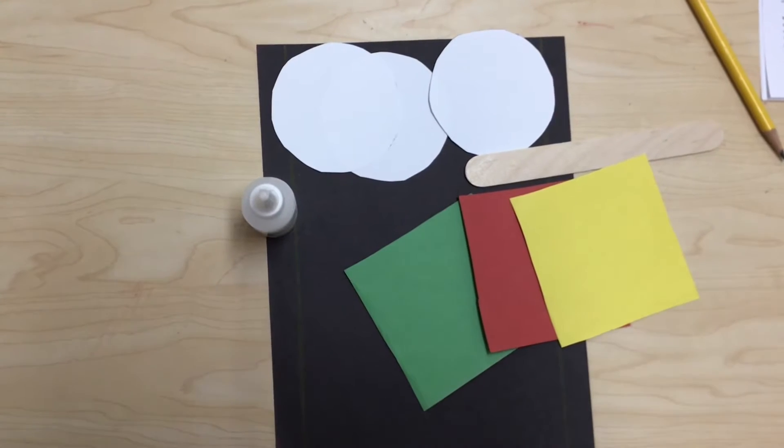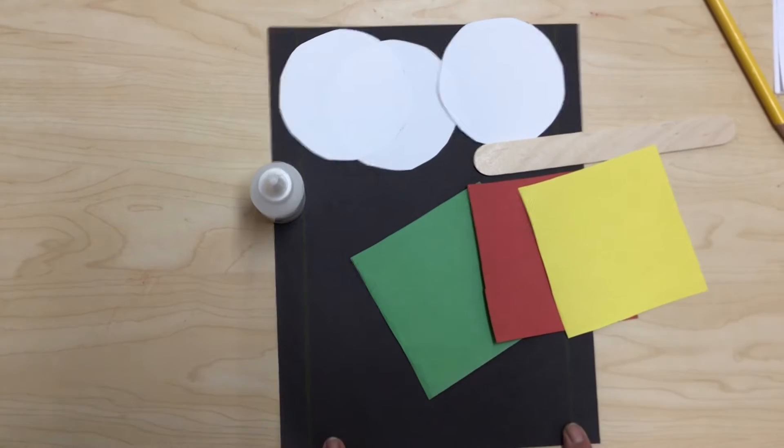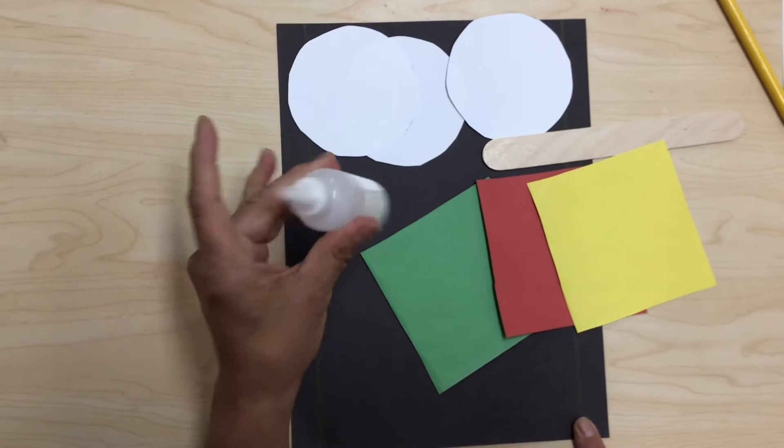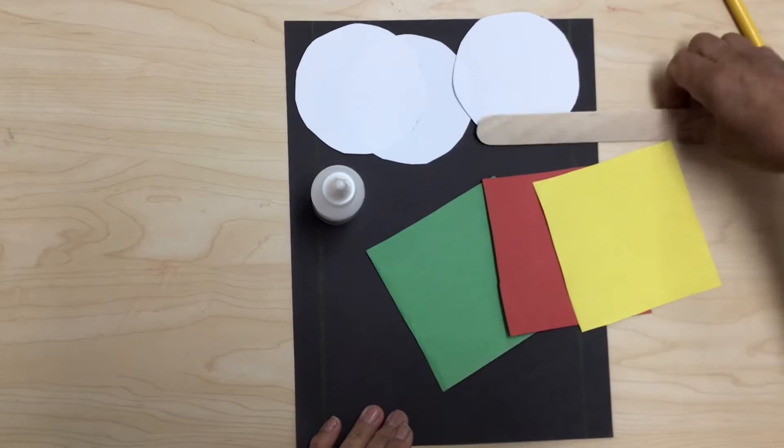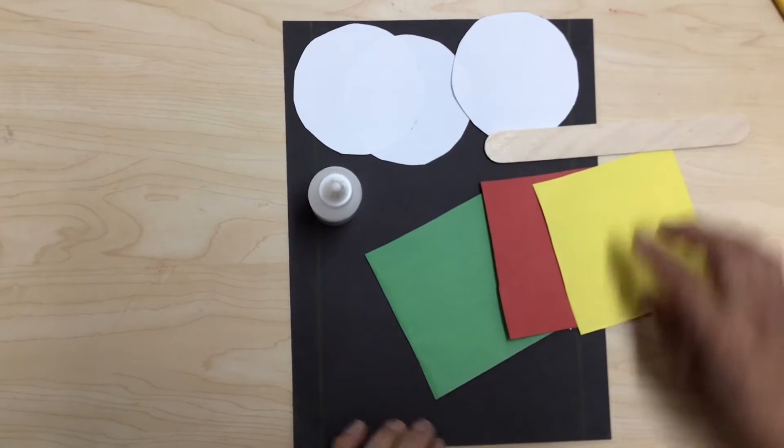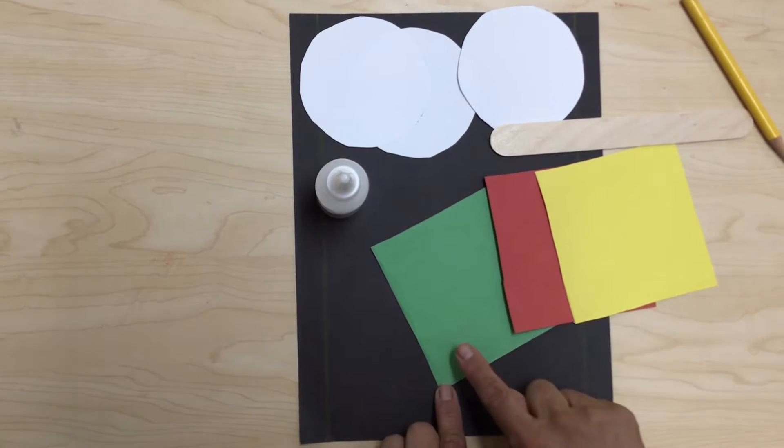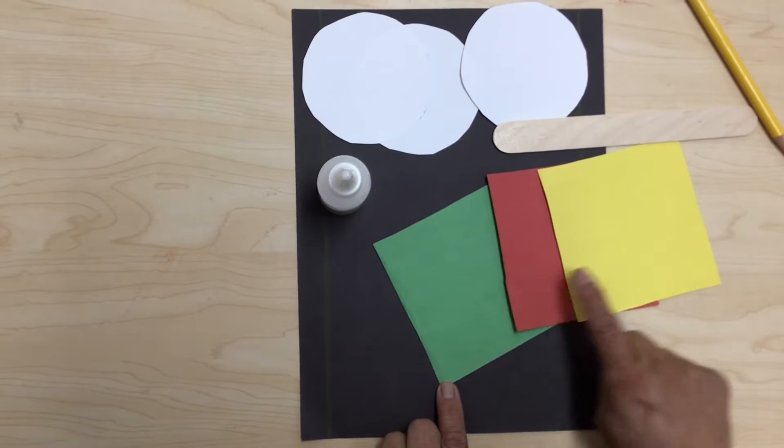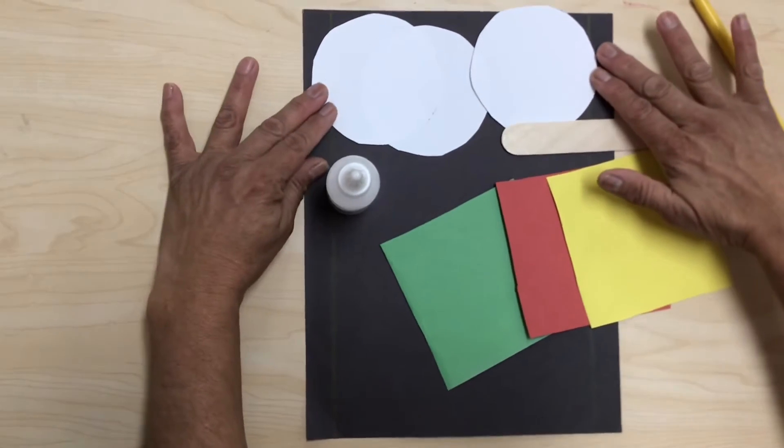The materials for this art project: we're going to need black construction paper, a glue bottle, a jumbo stick, three pre-cut square shapes (a green one, a red one, and a yellow), three pre-cut circle shapes, and scissors.